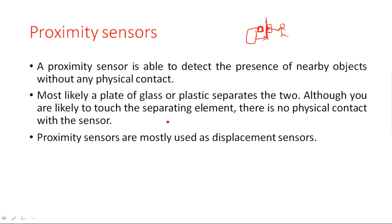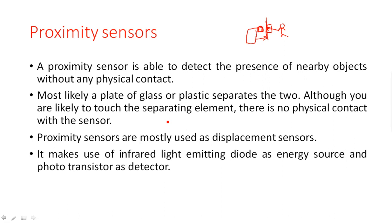Proximity sensors are mostly used as displacement sensors. Whenever some movement happens around the proximity sensor, it immediately shows some light or indication. It makes use of an infrared light-emitting diode as the energy source and a phototransistor as the detector. The LED emits light, and whenever any person or object is nearby, it reflects the signal back, which is then collected by the phototransistor.